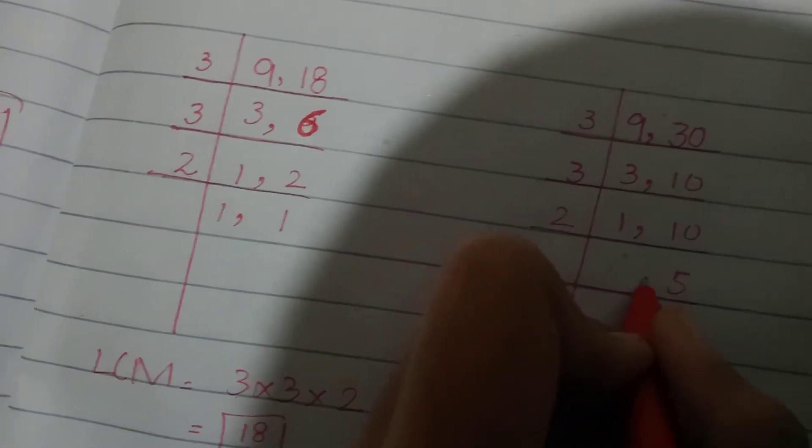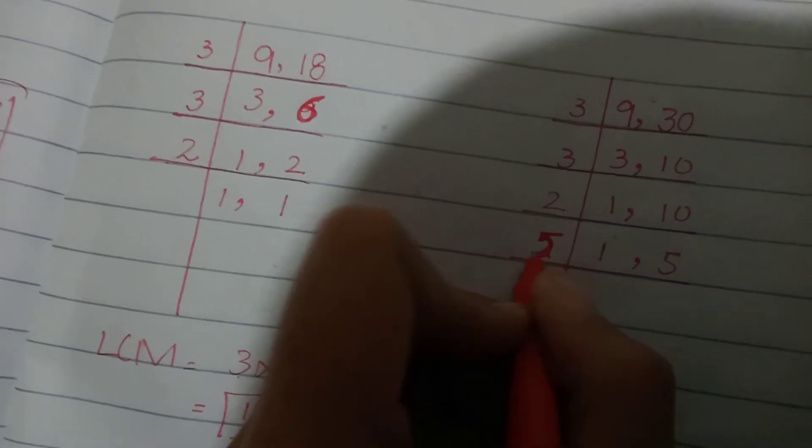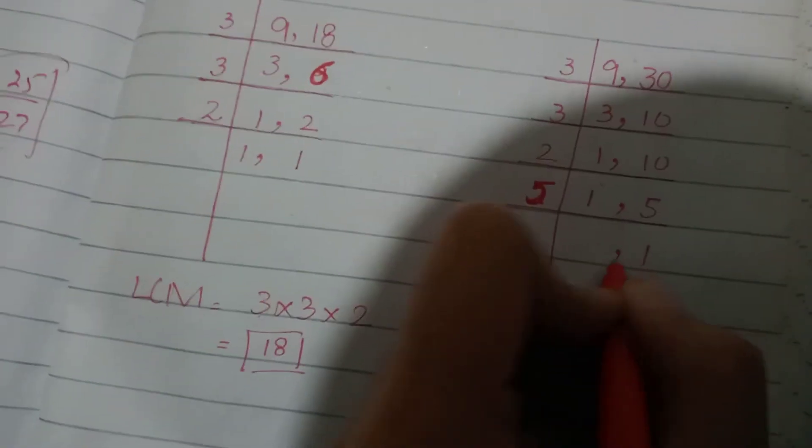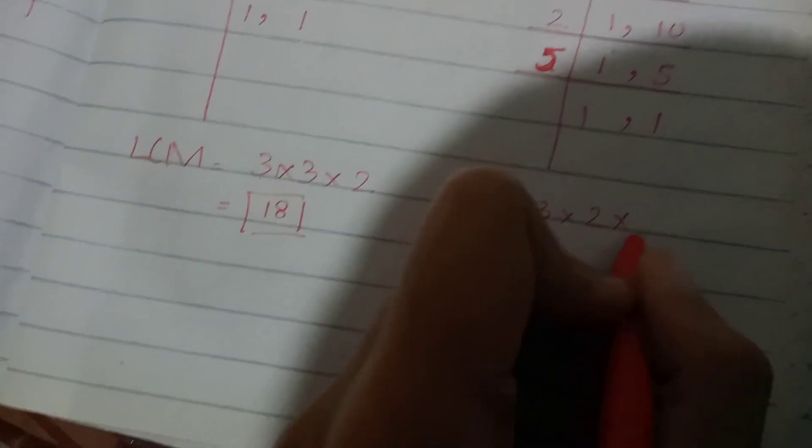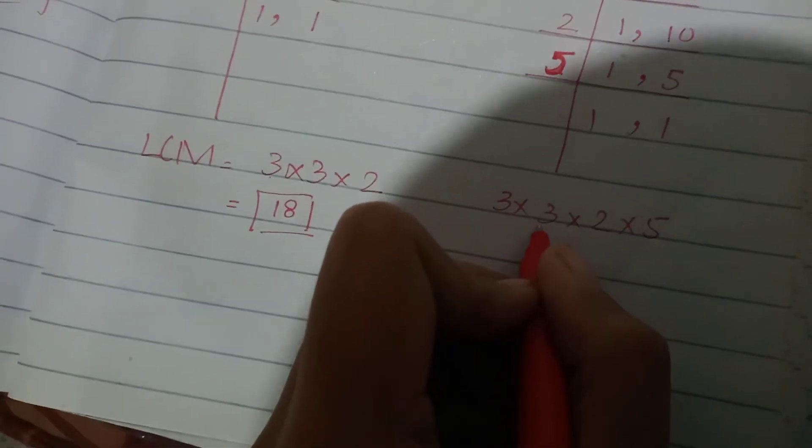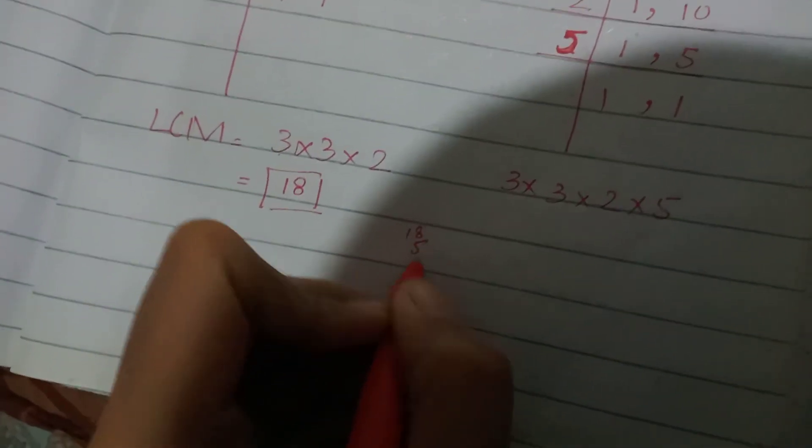We divide by 2, then by 5. 2 divides into 10 giving 5, and 1 stays as 1. Then you have 5. You write 3 multiply by 3 multiply by 2 multiply by 5. 3 times 3 is 9, 9 times 2 is 18, and 18 times 5 is 90.